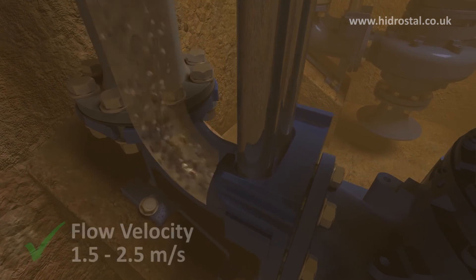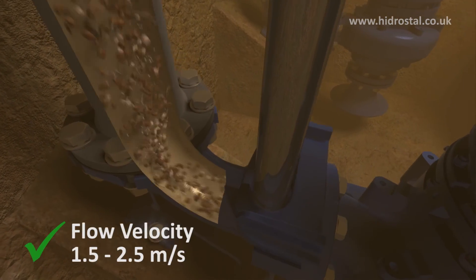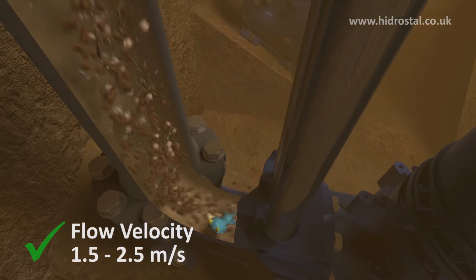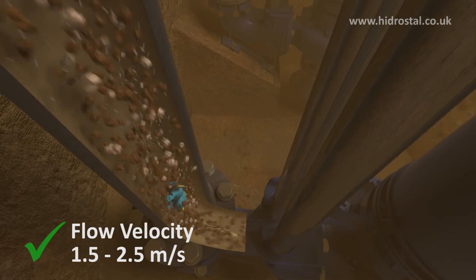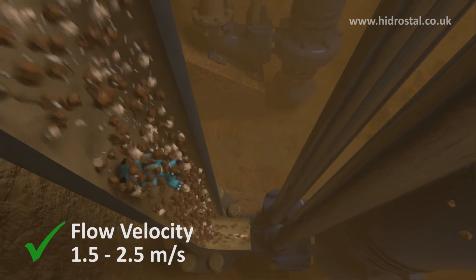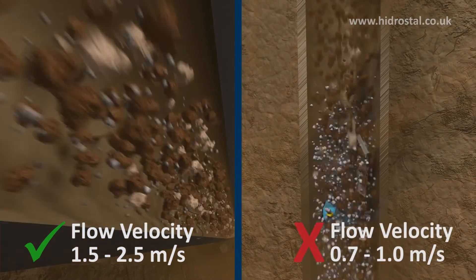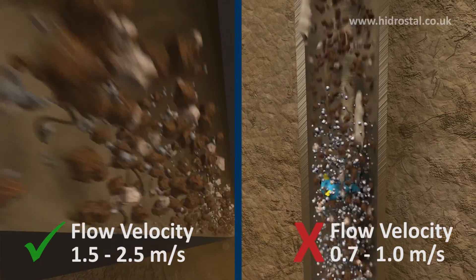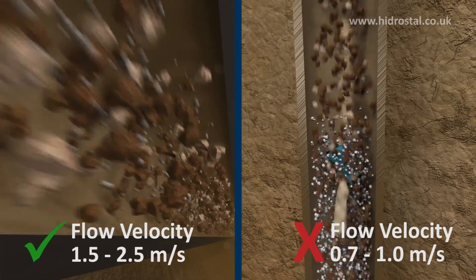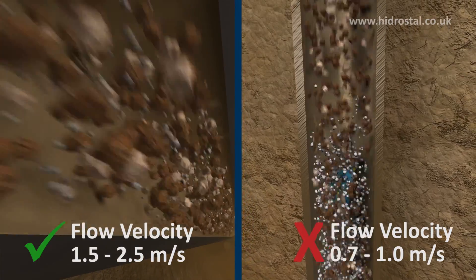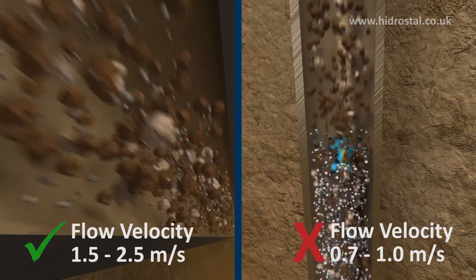The vertical discharge riser pipework should be sized to ensure a minimum flow velocity of 1.5 metres per second during the cleaning cycle, as levels approach the bottom water level stop point.